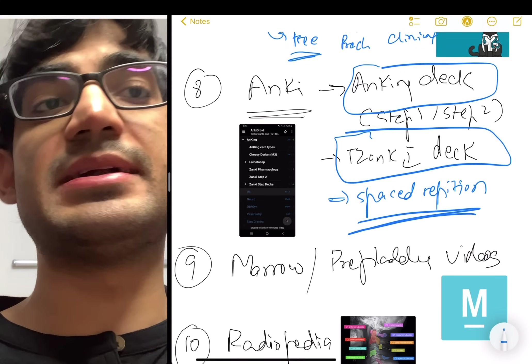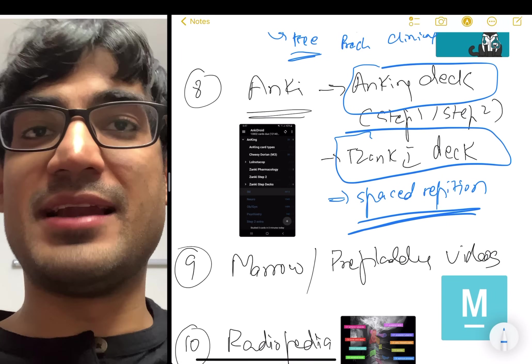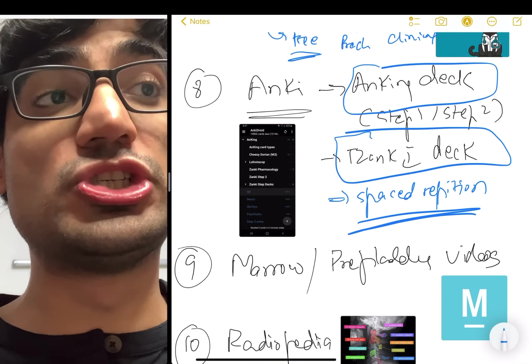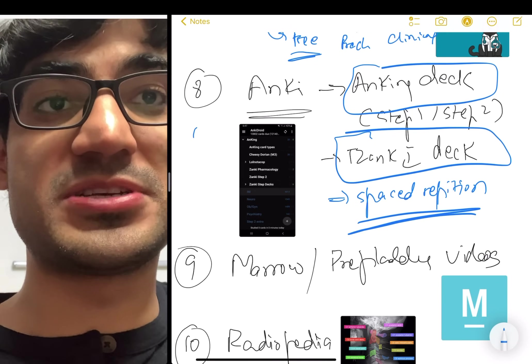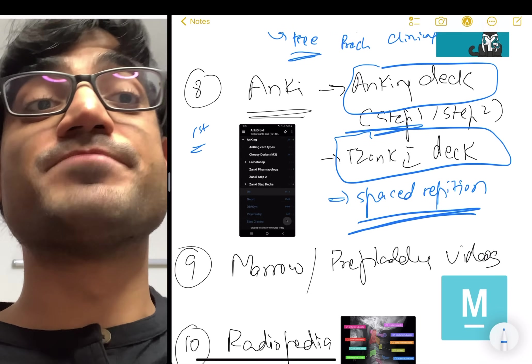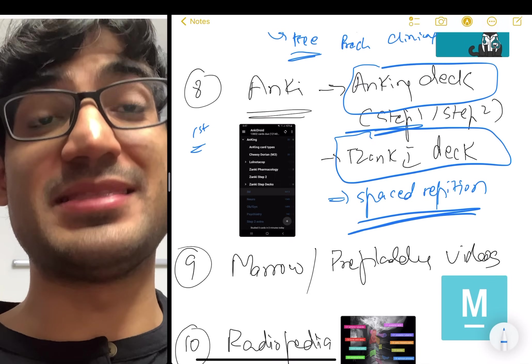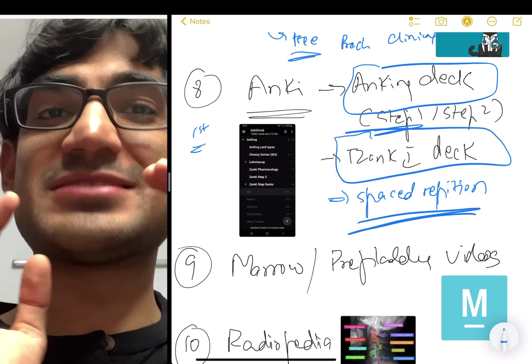And the decks that I'm talking about, the Anking deck, the Tzanki deck, these are actually pre-made decks by somebody who wrote Step One and Step Two CK and then consolidated all the information that was needed for these exams in just one deck. And that is so helpful. Let's say you just start in first year, right? With the Anking deck for Step One and Step Two CK, you start with the Step One prep. Imagine you have four years to go through the whole deck. That is so much time.